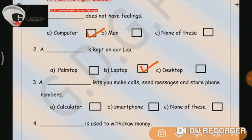Number 3: A dash lets you make calls, send messages and store phone numbers. A. Calculator. B. Smartphone. C. None of these. Correct answer is, yes, smartphone.